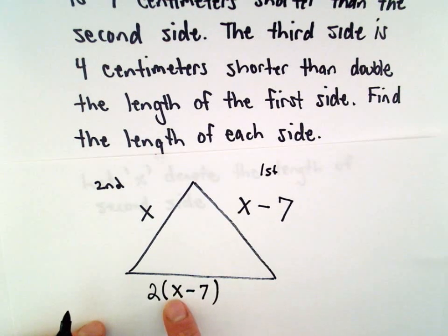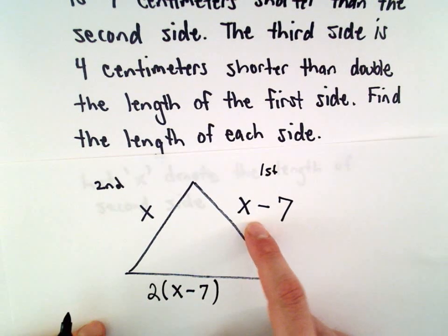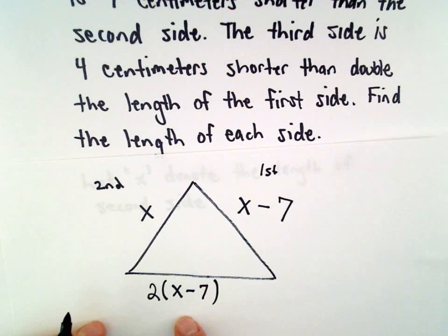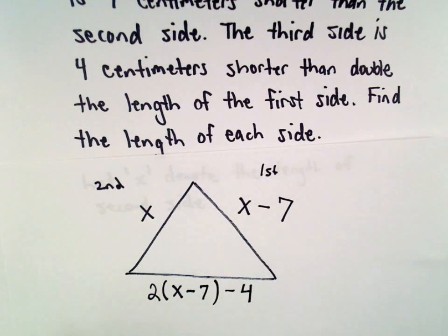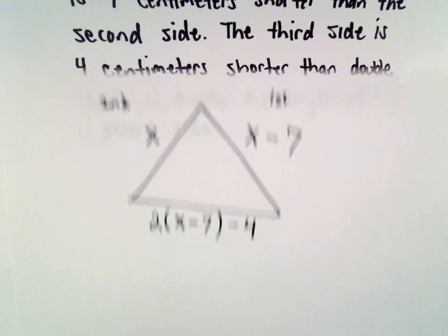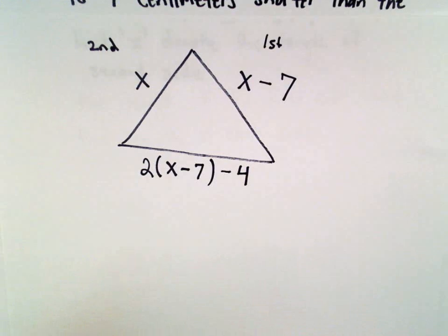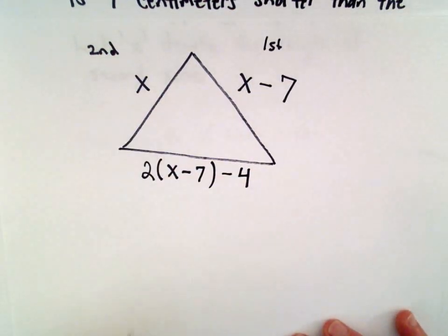And right now, this would say that the third side is double the length of the first side. But it's not. It's 4 centimeters shorter. So, we would actually have to subtract 4 from that. And now, we have a nice little relationship between all the sides.